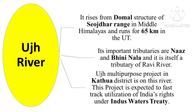The Uj River rises from the domal structure of the Sojdhar range in the middle Himalayas and runs for 65 kilometers in the UT. Its important tributaries are Naz and Bhini Nala. The Uj is itself a tributary of the Ravi River. The Uj multipurpose project in Kathua district is located on this river.